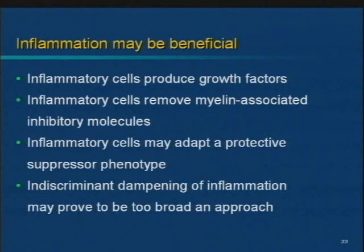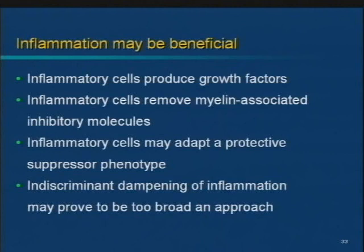Why would this happen? Inflammatory cells produce growth factors — those are something we'd like to have more of. They can release inhibitory molecules that prevent some parts of the damage. They may actually be activated cells that are suppressors — not driving inflammation, but perhaps turning it off. So indiscriminate blocking of all inflammatory responses may be more than what we want to do when trying to control inflammatory diseases like MS and other inflammatory nervous system diseases.